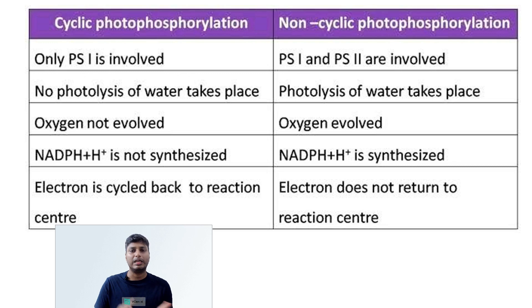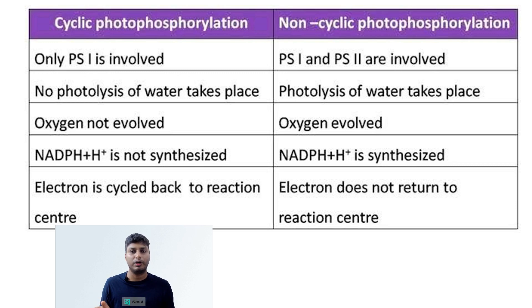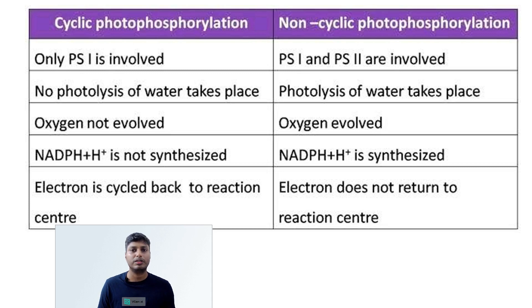Comparing cyclic and non-cyclic photophosphorylation: in cyclic, only a single photosystem (PS1) is involved, while in non-cyclic both PS1 and PS2 are involved. In cyclic, only ATP is formed, whereas in non-cyclic both NADPH₂ and oxygen are produced. Another key difference: in cyclic, electrons travel back to the photosystem, whereas in non-cyclic the electrons released from PS2 do not return to PS2.